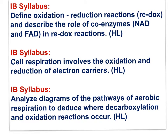Here are IB syllabus statements: define oxidation-reduction reactions and describe the role of coenzymes in redox reactions. NAD+ and FAD oxidize organic intermediates in cell respiration to become reduced. In their reduced forms, NADH and FADH2, they transfer electrons held in high energy positions to the electron transport system. Cell respiration involves the oxidation-reduction of electron carriers. In the ETS, electron carriers are repeatedly oxidized and reduced as electrons change position and release energy.